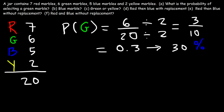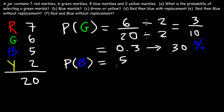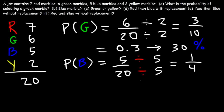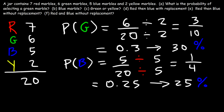Now what about the blue marble? What is the probability of selecting the blue marble? There are 5 blue marbles in the jar out of 20. So the probability is 5 over 20. Let's reduce the fraction by dividing each number by 5. 5 divided by 5 is 1, 20 divided by 5 is 4. 1 over 4 is 0.25 as a decimal, which correlates to 25%. So there's a 25% chance of selecting a blue marble.